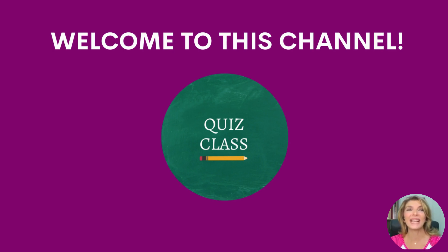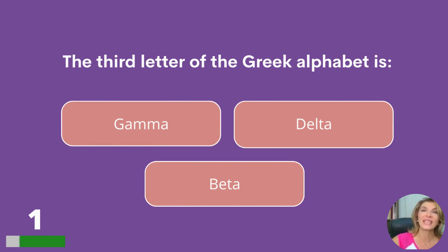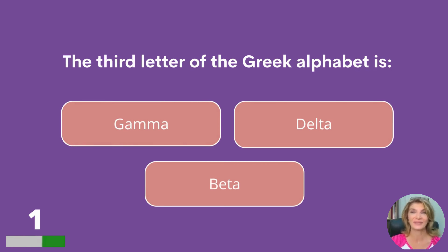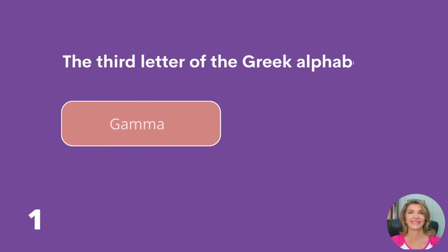Hello and welcome to Quiz Class. I'm Ellen, your host. Today we have a 50-question general knowledge quiz. At the end, please tell us your score. The third letter of the Greek alphabet is gamma, delta, or beta? Gamma.